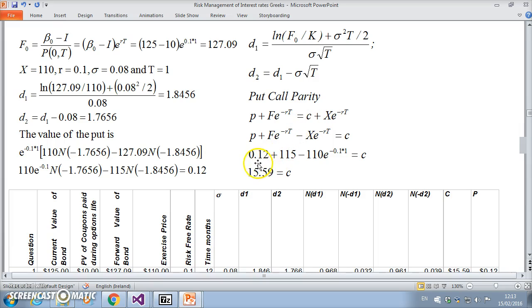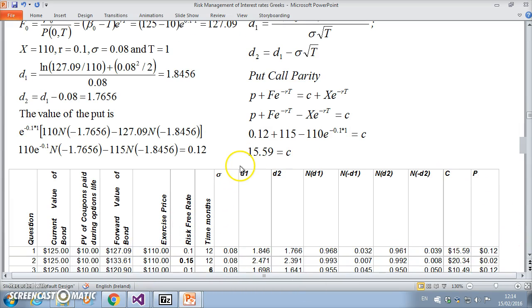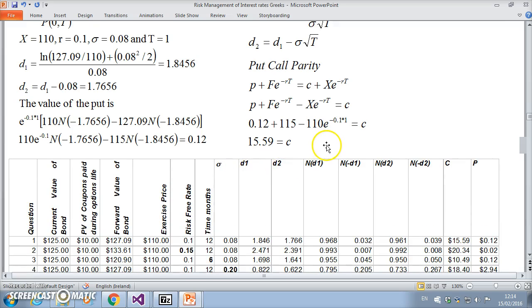If I apply that, we just worked out the put was 0.12. If we discount the futures at the risk-free rate, 127.09, if we discount back it brings us back to 125 minus 10, which is 115. So the discounted value of the futures is 115. X was given as 110—we discount that as well. If we work out the value of the call, it's 15.59.